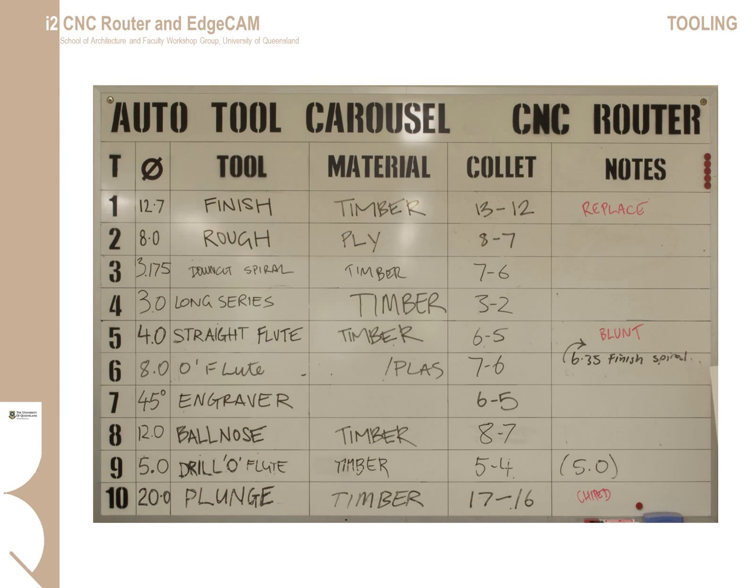All of the main tooling available via the automatic tool changer is listed on the chart on the wall behind the CNC router. There are more tools available, so if the type of tool you need is not listed on the wall, discuss what you want to achieve with the workshop technicians as they may have a tool that can be swapped into the tool changer, or alternatively they can order a tool specially for your job.